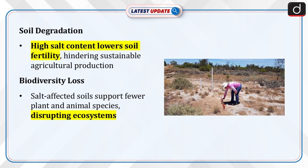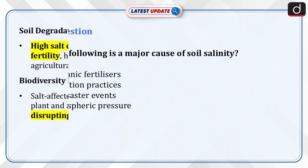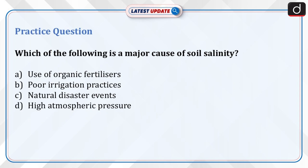It's time to test your knowledge. Which of the following is a major cause of soil salinity? A. Use of organic fertilizers. B. Poor irrigation practices. C. Natural disaster events. D. High atmospheric pressure.